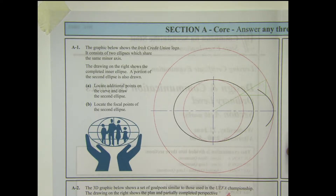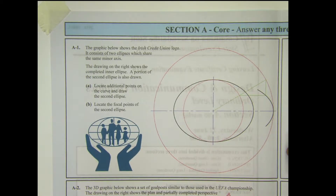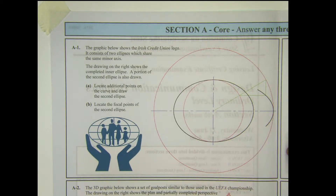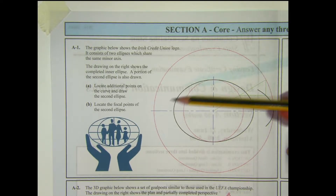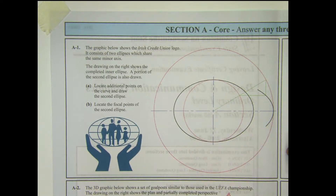The graphic below shows the Irish Credit Union logo. It consists of two ellipses which share the same minor axis. The drawing on the right shows the completed inner ellipse, so this one is already done for us. A portion of the second ellipse is also drawn. Part A asks us to locate additional points on the curve and draw the second ellipse, and then locate the focal points of the second, larger ellipse.